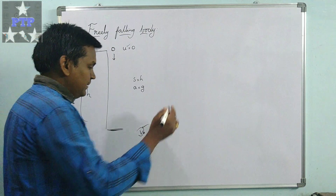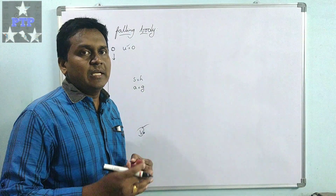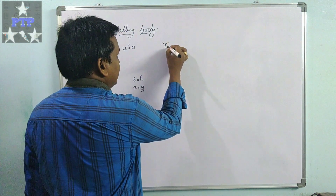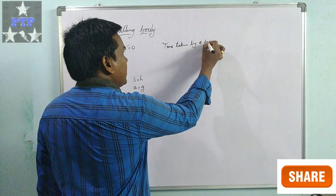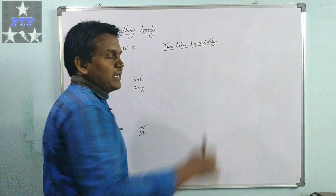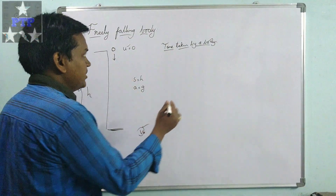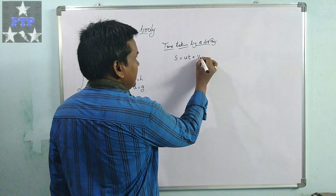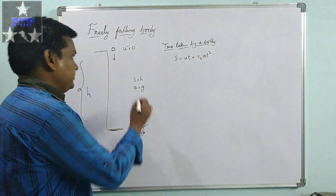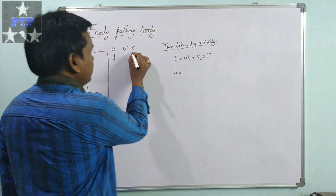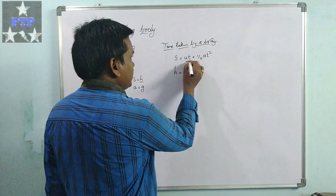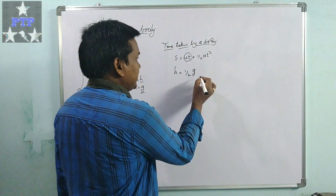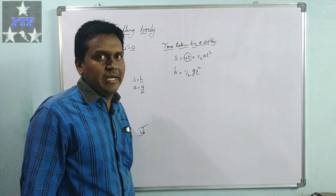Let us consider two situations. First, the time taken by the body dropped from the top of a building of height h to reach the ground. Using the displacement equation: s = ut + ½at². Here s is h, initial velocity u is zero for a freely falling body, and acceleration a is g. So h = ½g·t².